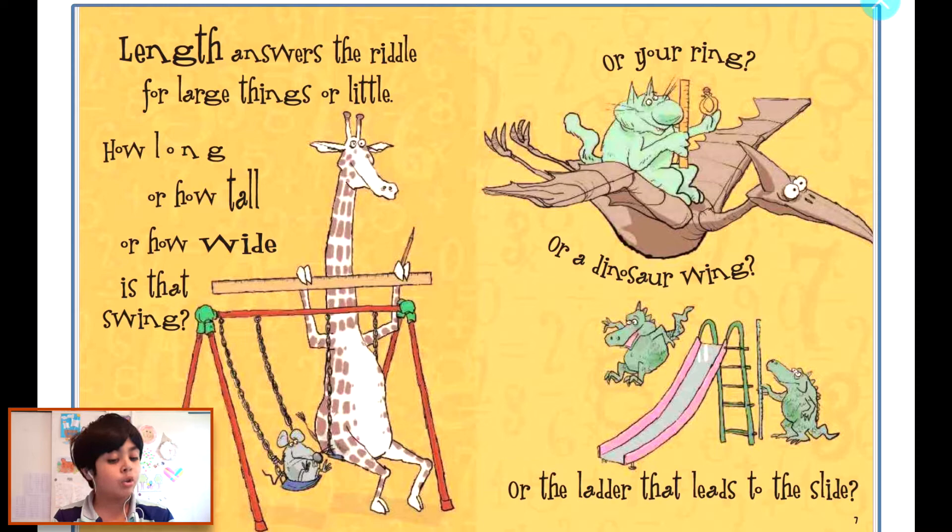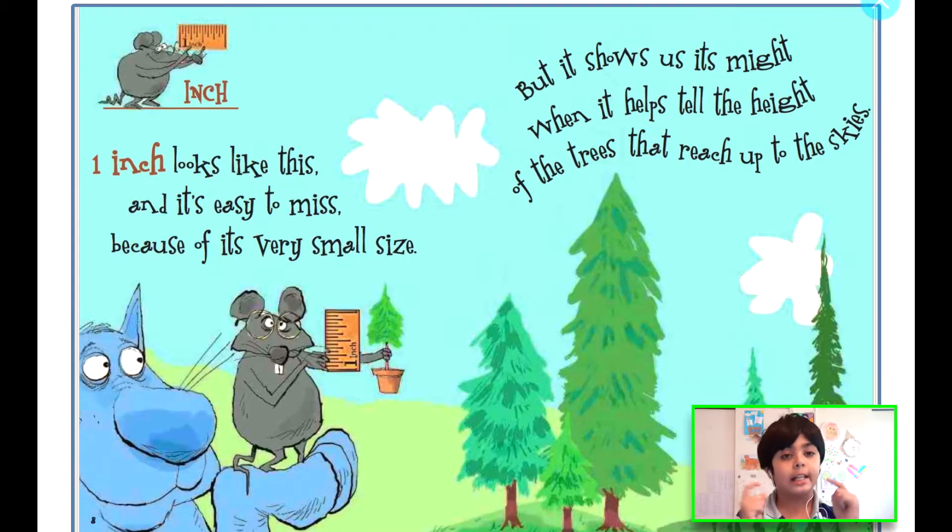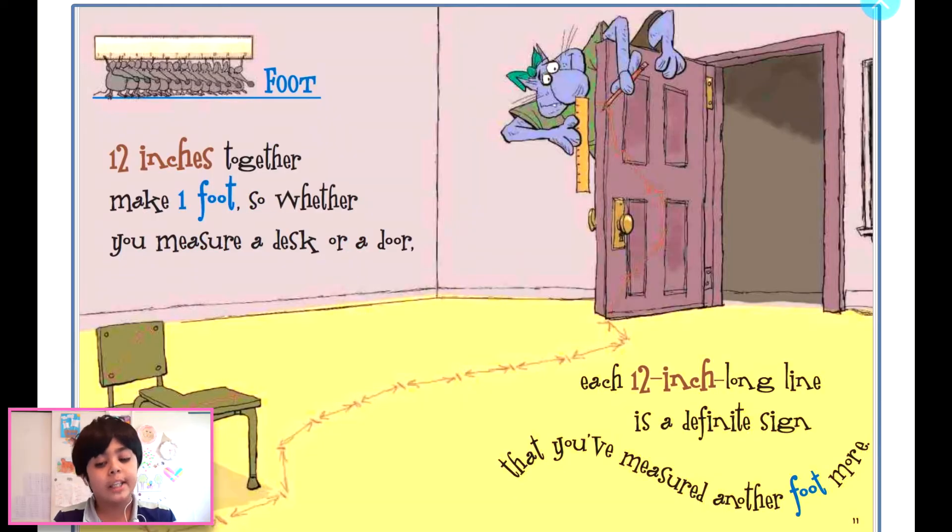One inch looks like this and it's easy to miss because of its very small size. But it shows us its might when it helps tell the height of the trees that reach up to the skies. Twelve inches together make one foot.